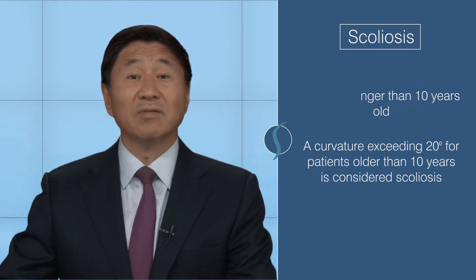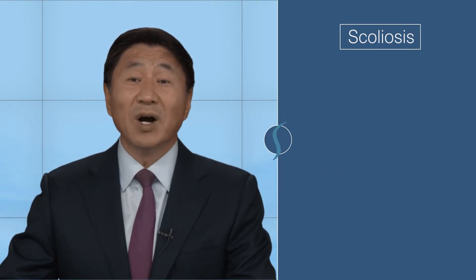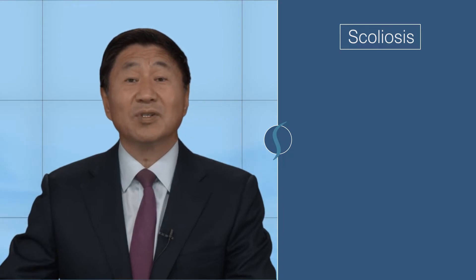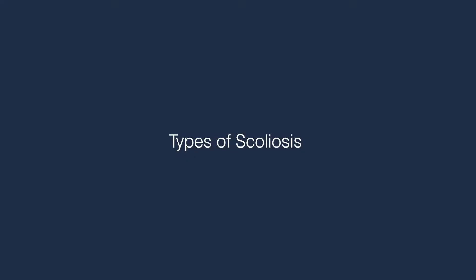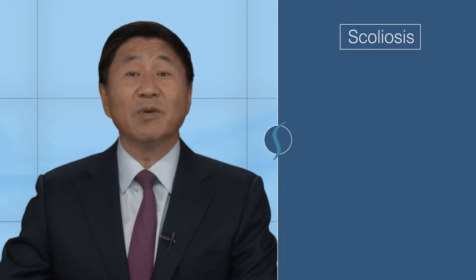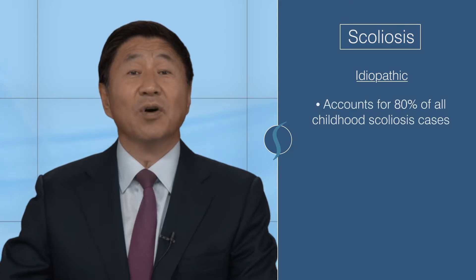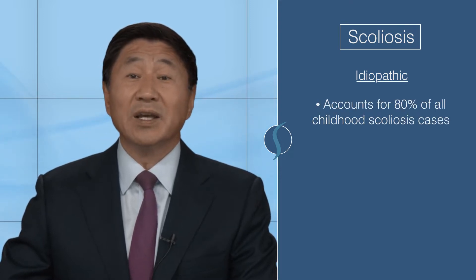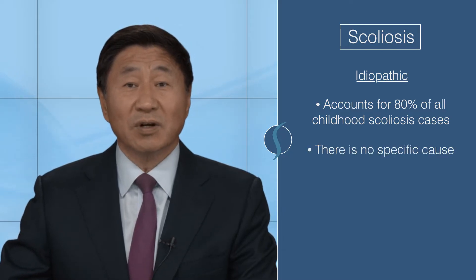The severity of deviation varies depending on the individual, and in mild cases, individuals often don't experience any symptoms beyond the cosmetic deformity. The most common form of scoliosis accounts for 80% of all childhood scoliosis cases. It's called idiopathic, which means there's no specific cause.